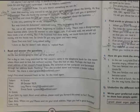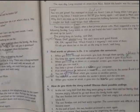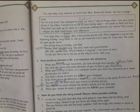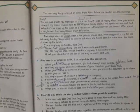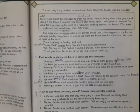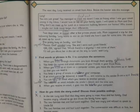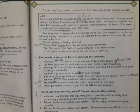The next day, Lucy received an email from Alice. Below the header was the message. Next day she got the email from her cousin. It was: Lucy, you are just great. You managed to track me down. Track me down means to find out. I was so happy when I saw your email sitting in my inbox.